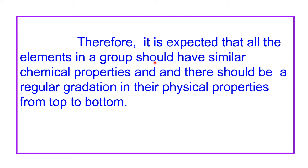Therefore, it is expected that all elements in a group should have similar chemical properties, and there should be a regular gradation in their physical properties from top to bottom. In a group, elements have the same chemical properties because they have the same valence shell electronic configuration, while physical properties show slight but regular variation.